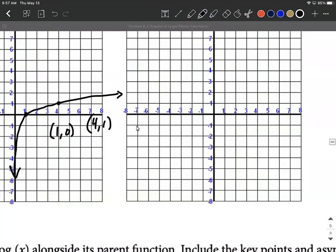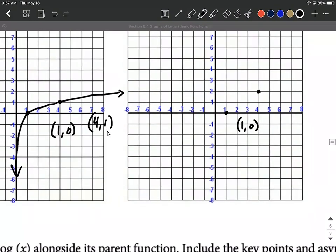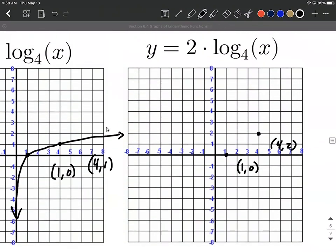So the point one zero is still going to remain at one zero. If you multiply that y value by two, you still end up with zero. But on this other one, we have four one, what's going to happen is that's going to become the key point four comma two, because if you multiply that y value by two, as this stretch is going to indicate, that's going to give you the ordered pair four two as a key point.